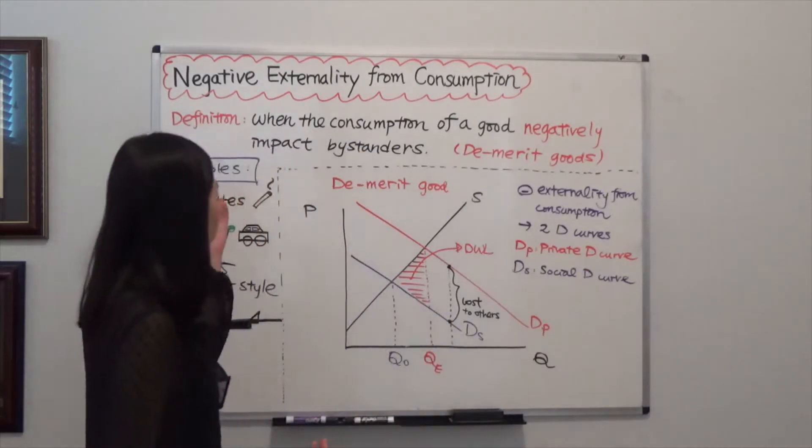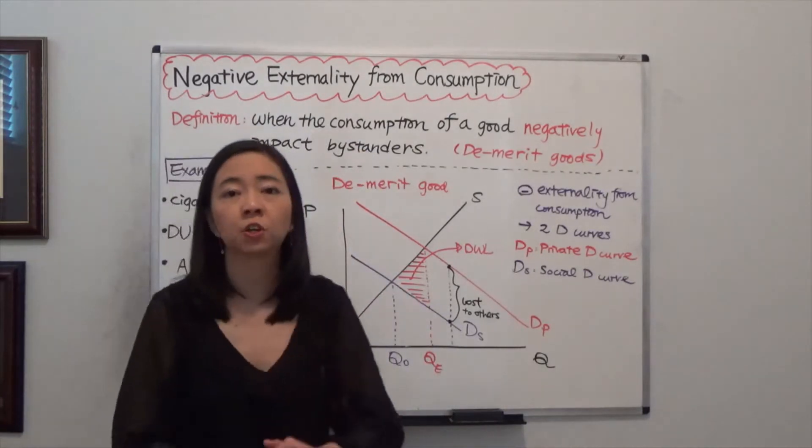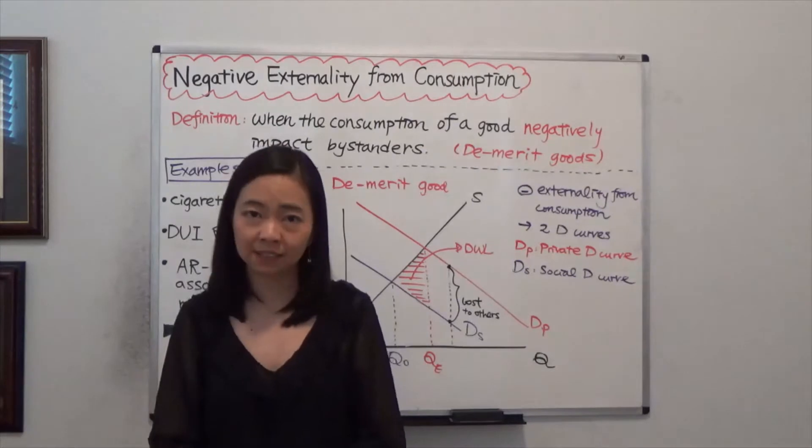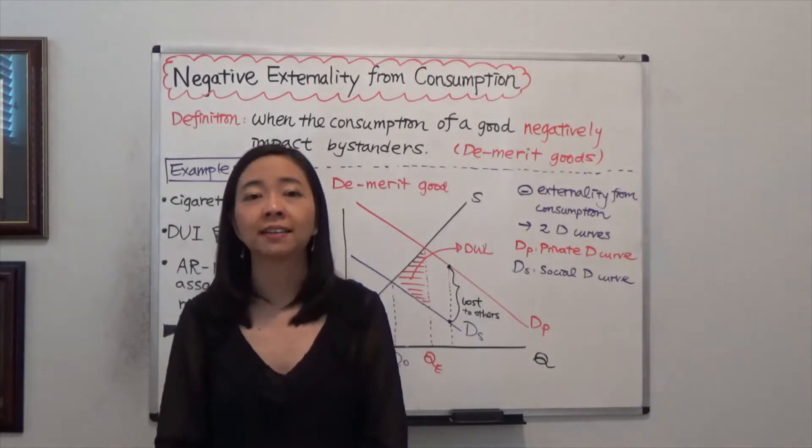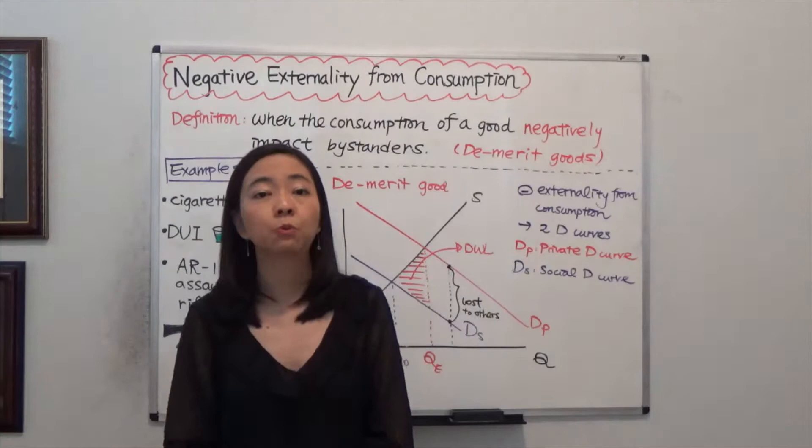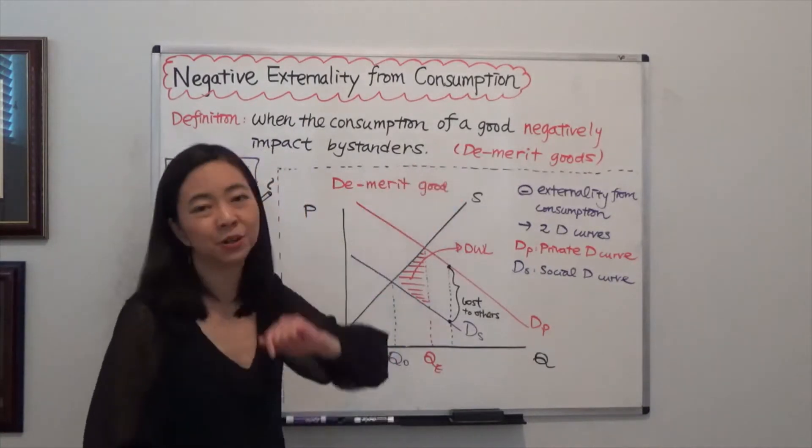So here's the definition. When the consumption of a good negatively impacts bystanders, then we call that negative externality from consumption. And we call that kind of good demerit goods.